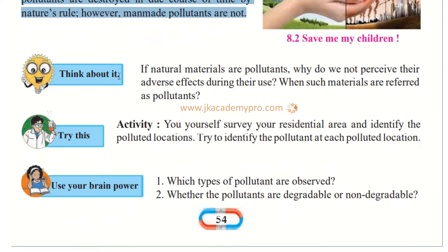Now think about it: if natural materials are pollutants, why do we not perceive their adverse effects during their use? So natural materials are pollutants — why can't we see or feel the harm? When such materials are referred to as pollutants, why are they not harming the environment? As mentioned earlier, nature has its own way of taking care of these pollutants — nature takes care of them and destroys them.